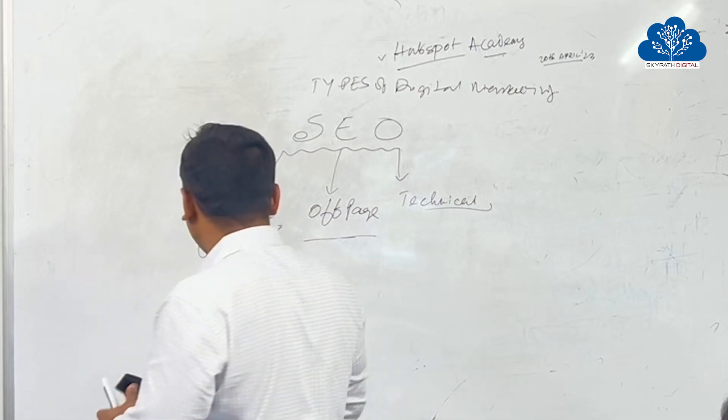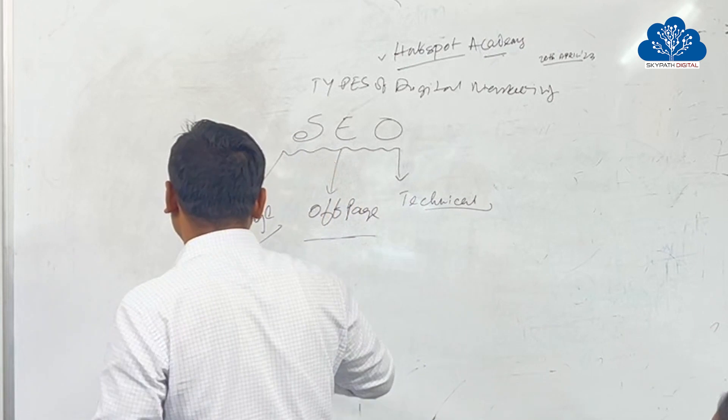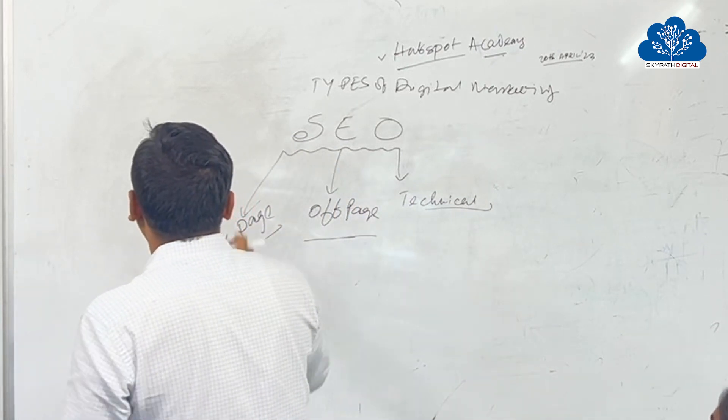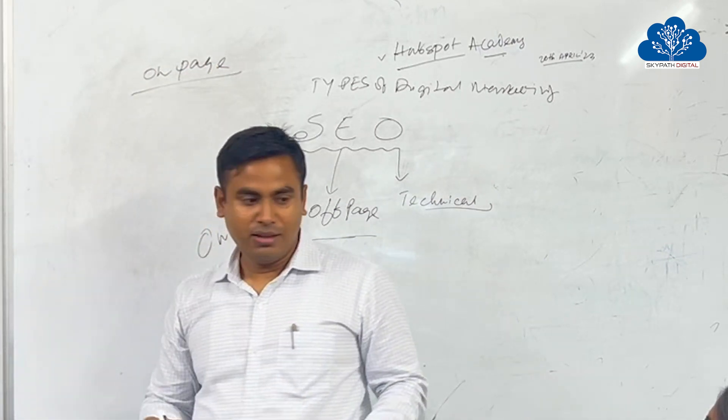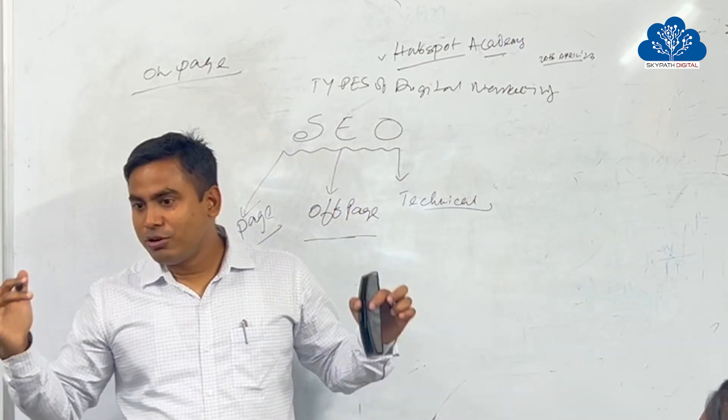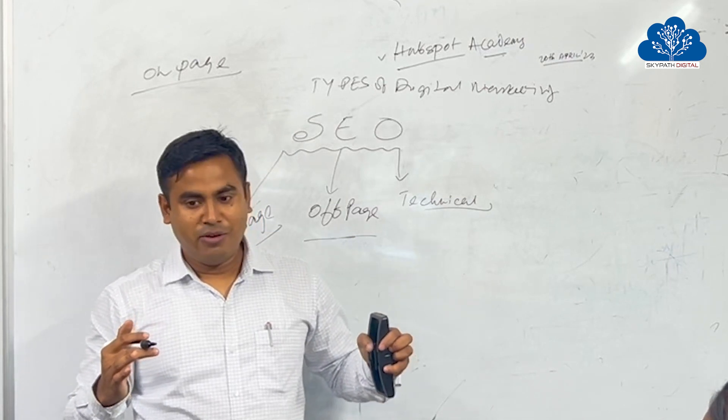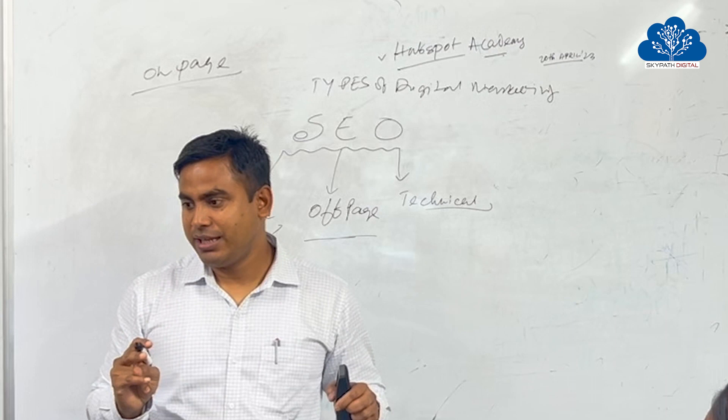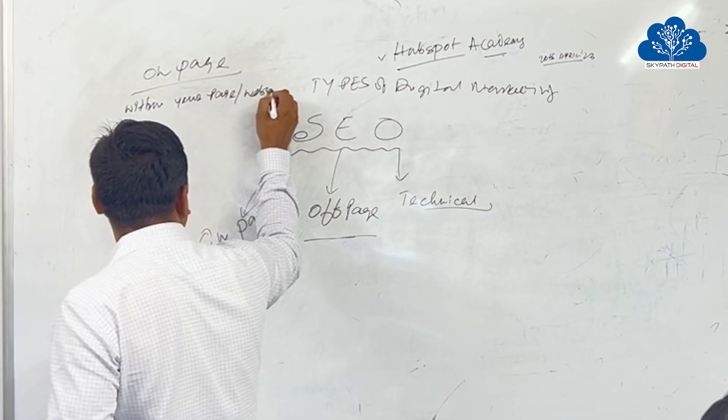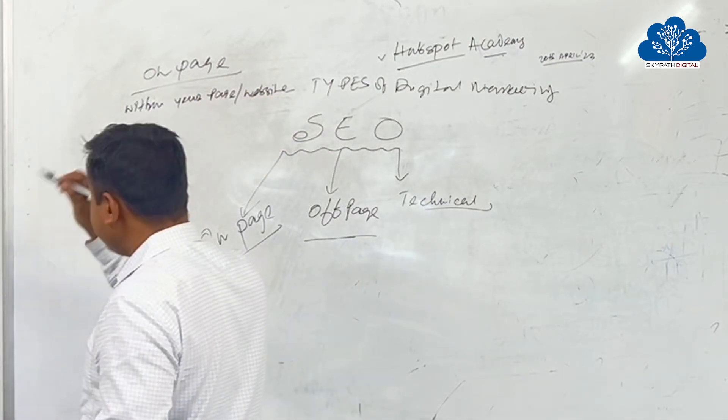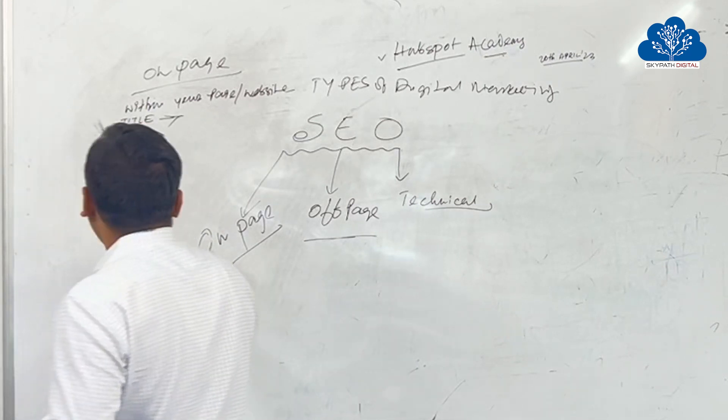So in on-page SEO there are more than 30 parameters. What comes under on-page SEO? On-page means within your page, within your website. Whatever you are doing within your page or website comes under on-page. What are that? One is called title.